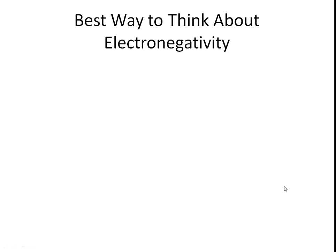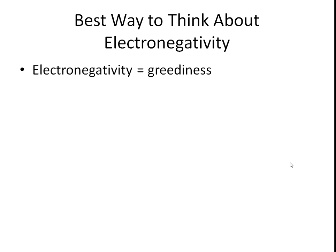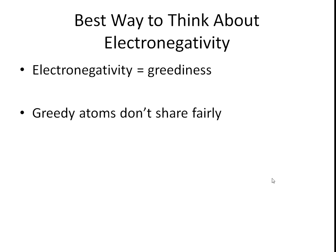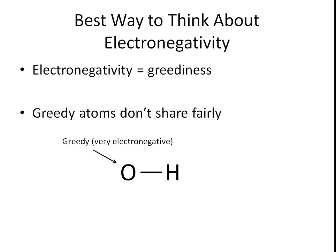Let's look at electronegativity because it's very important. The best way to think about electronegativity is it's an atom's greediness — it measures how greedy an atom is. Greedy atoms don't share fairly. For example, if you've got an oxygen bonded to a hydrogen, the oxygen is a greedy atom. Its electronegativity is high and higher than that of hydrogen. So oxygen is greedier, and your electrons are going to be pulled more towards it. The oxygen wants those electrons.